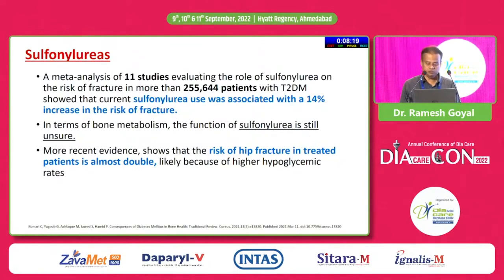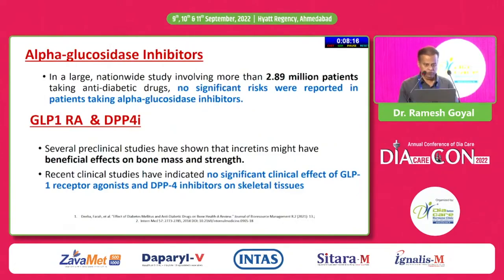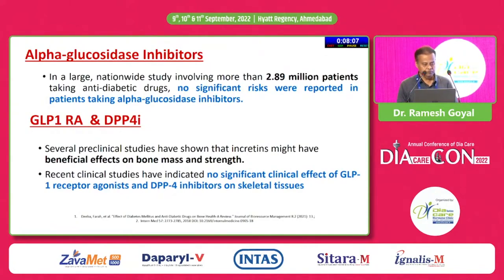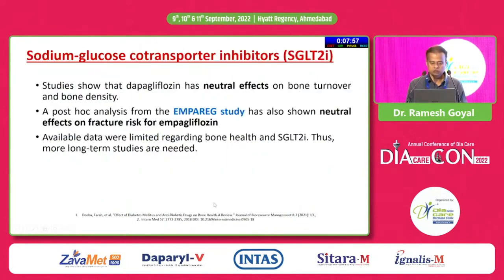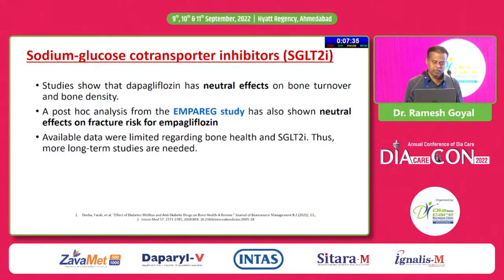A 2.89 million patient meta-analysis reported no significant fracture risk in patients taking GLP-1 receptor agonists and DPP-4 inhibitors — no significant clinical effect on skeletal tissue was seen. For SGLT2 inhibitors, studies show that empagliflozin has a neutral effect on bone turnover and bone density, and in a post-hoc analysis of the EMPA-REG study it was also neutral regarding fracture risk, though available data on SGLT2 inhibitors and bone health remain limited.